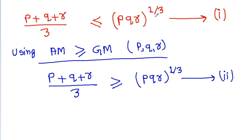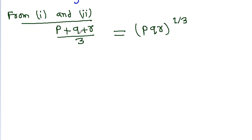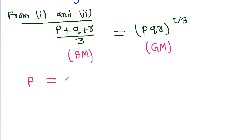Equation 1 says (p plus q plus r)/3 is less than or equal to (pqr)^(1/3), and equation 2 says (p plus q plus r)/3 is greater than or equal to (pqr)^(1/3). So from equations 1 and 2, we get (p plus q plus r)/3 equals (pqr)^(1/3). Since arithmetic mean equals geometric mean only when all terms are equal, we conclude p equals q equals r.